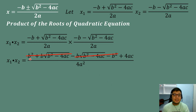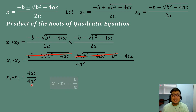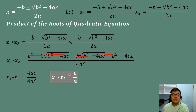Square root of B squared minus 4AC times negative square root of B squared minus 4AC is equal to negative B squared plus 4AC, all over 2A times 2A which is 4A squared. Then, we cancel: B squared minus B squared equals zero, and the square root terms cancel out as well. So, what remains is 4AC over 4A squared. Simplifying, 4A cancels, giving us the product of the two roots equal to C over A.